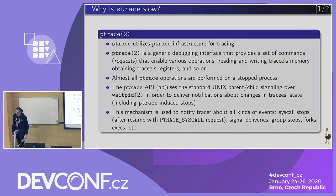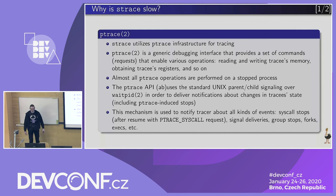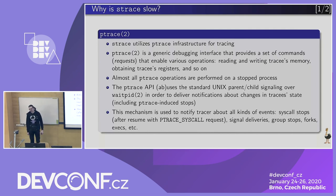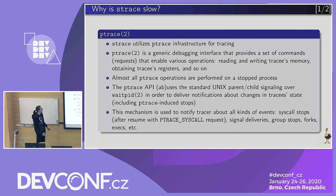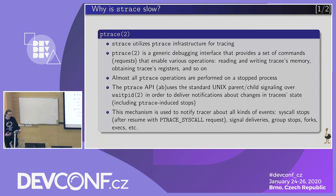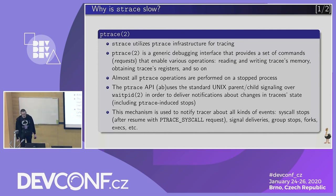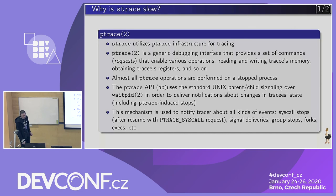Specifically, strace uses the ptrace debugging subsystem for tracing. ptrace is a generic debugging interface which provides a set of commands for manipulating tracees — including reading and writing tracee memory, reading and writing registers, etc. Almost all of these operations are performed on stopped processes. Another part of the ptrace API, which is kind of peculiar, is that it abuses the standard Unix signal interface — specifically waitpid — in order to deliver notifications about tracee events.